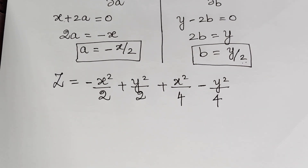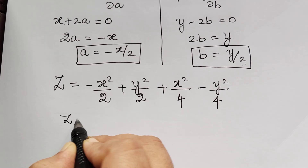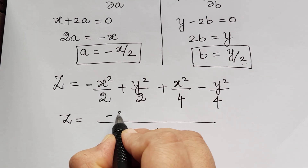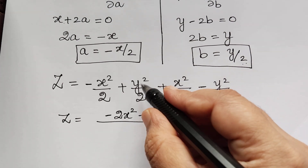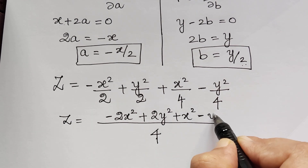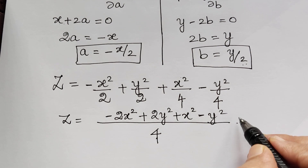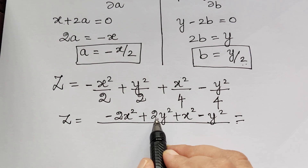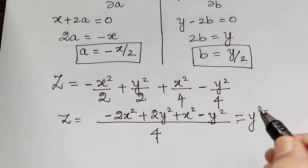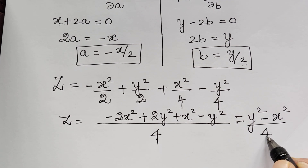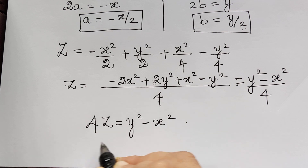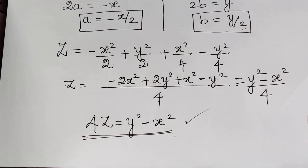Now taking the LCM throughout, which is 4, we get z = (-2x² + x²)/4 + (2y² - y²)/4. Simplifying, 2y² - y² = y² and -2x² + x² = -x², so 4z = y² - x². This is the required singular integral for the given problem.